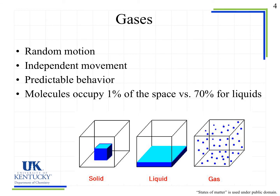Looking more closely at gases, their motion is completely random — these molecules are moving in all different directions, they bounce off one another and go off in a different direction, and their movement is not dependent on other particles, unlike liquids and solids where we have to deal with intermolecular forces. This predictable behavior lets us predict how something is going to change depending on a change in one or more variables. Also, gas molecules occupy only about 1% of the space compared to roughly 70% for liquids, meaning the vast majority of a gas sample is in fact empty space, since those particles are very far apart relative to their size.